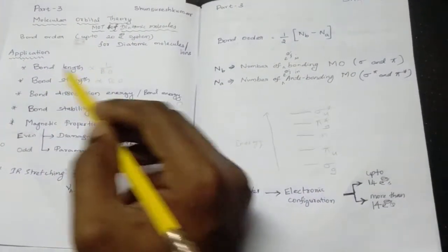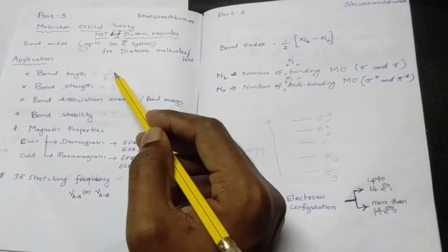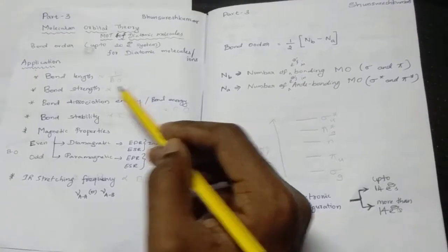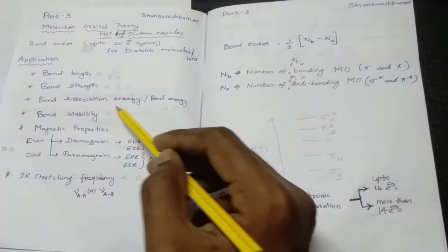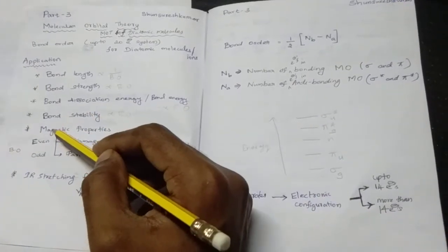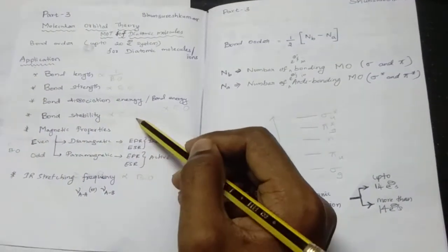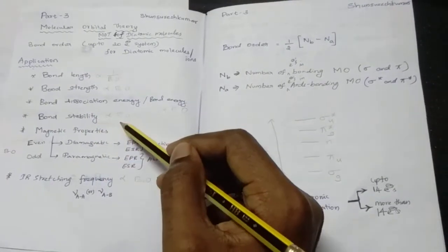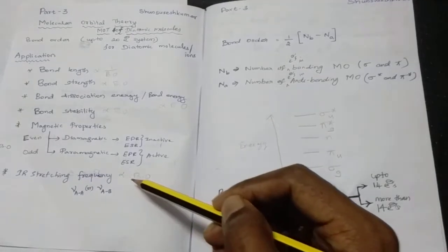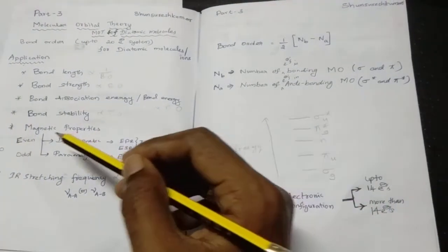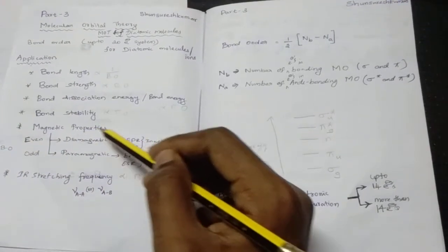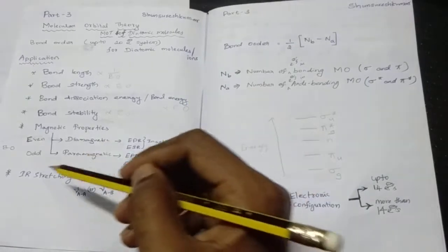Bond length is inversely proportional to bond order. Bond strength is directly proportional to bond order. Bond dissociation energy or bond energy is directly proportional to bond order. Bond stability of molecules or ions is directly proportional to bond order. IR stretching frequency is directly proportional to bond order. If we know the bond order, we can calculate the magnetic properties of diatomic molecules or ions.